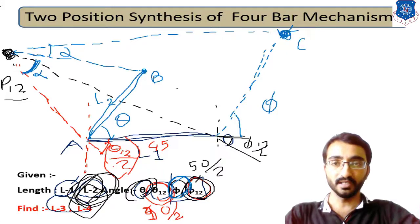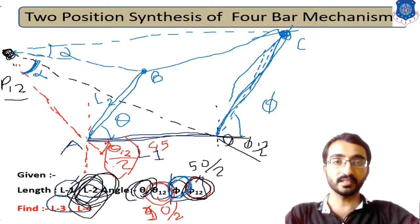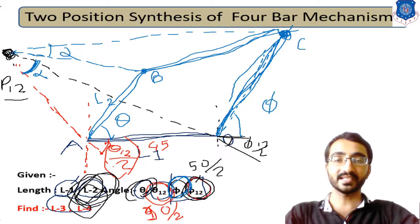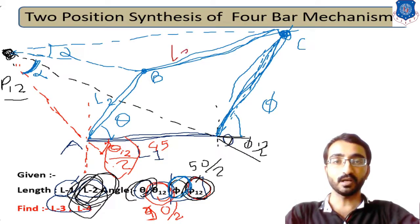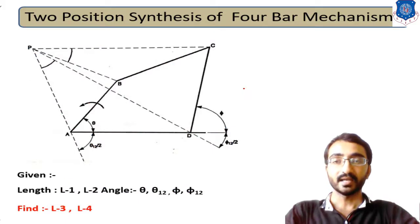By joining B to C, we get the length of link number 3. By joining C to D along the phi-angle line, we get the length of link number 4. In this way, by using the given data, we have found out the lengths of link number 3 and link number 4 — completing the two-position synthesis of the four-bar mechanism.